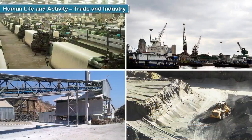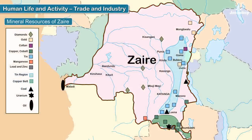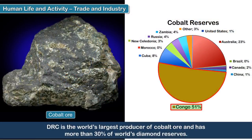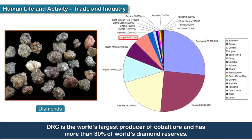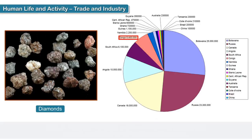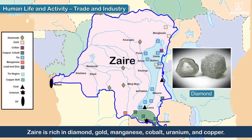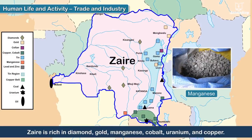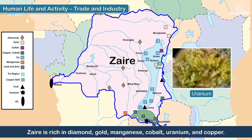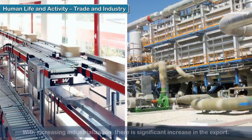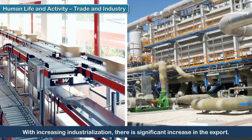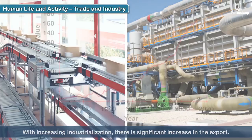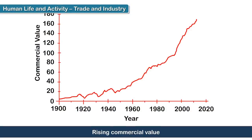Trade and Industry: The country is rich in mineral resources, especially its southern region. DRC is the world's largest producer of cobalt ore and has more than 30% of the world's diamond reserves. Zaire is rich in diamond, gold, manganese, cobalt, uranium and copper. With increasing industrialization the world over, there is significant export and rising commercial value of these minerals.